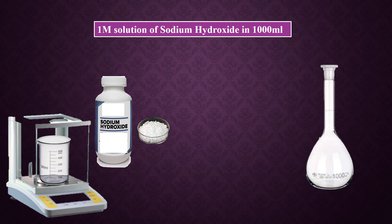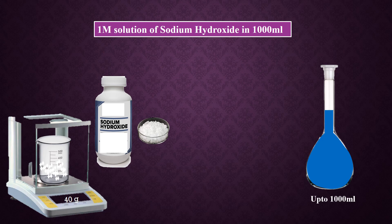For example, if we want to prepare 1000 milliliters of 1 molar solution of sodium hydroxide, multiply the molar mass of sodium hydroxide, which is 40, by 1, as we want to prepare a 1 molar solution. The answer is 40. Take 40 grams of sodium hydroxide in a beaker, dissolve it in a little water, then add it to a 1000 milliliter measuring flask, and dilute the solution up to 1000 milliliters. This will be a 1 molar solution of sodium hydroxide in 1000 milliliters.